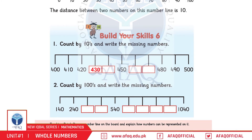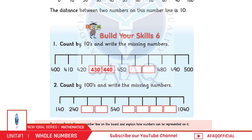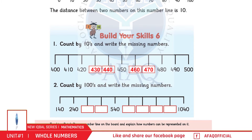Good — 430. Next: 440, 450. Next, आप बताएं. Good — 460. Next, आप बताएं. Good — 470, 480, 490 and 500.